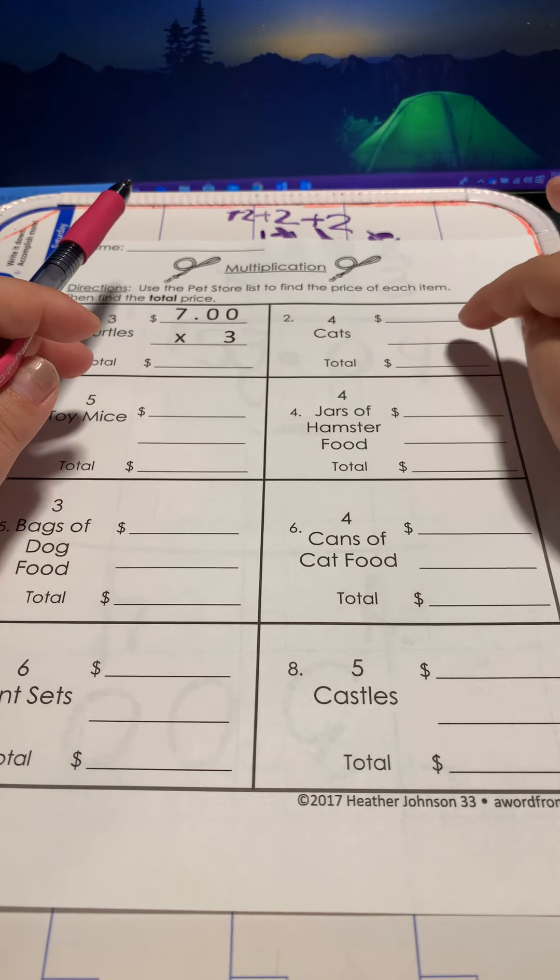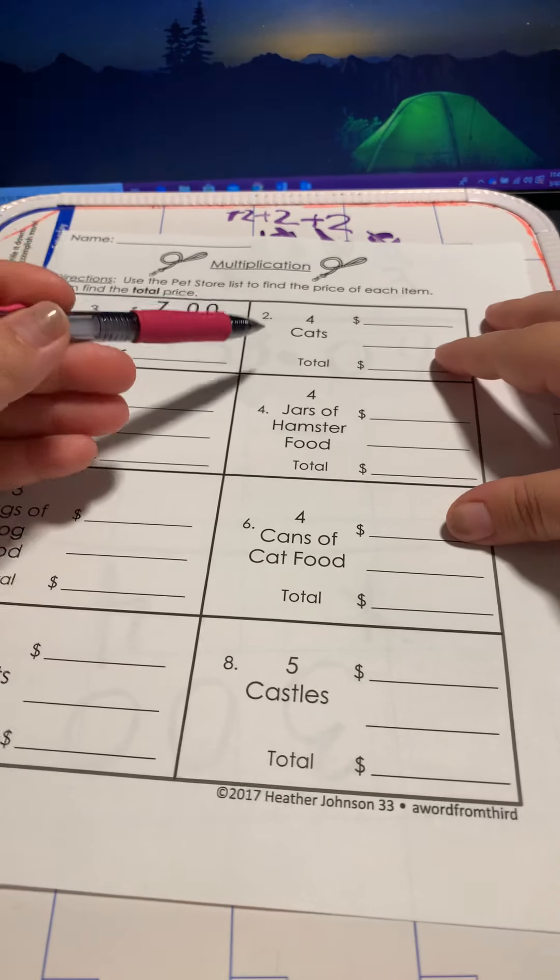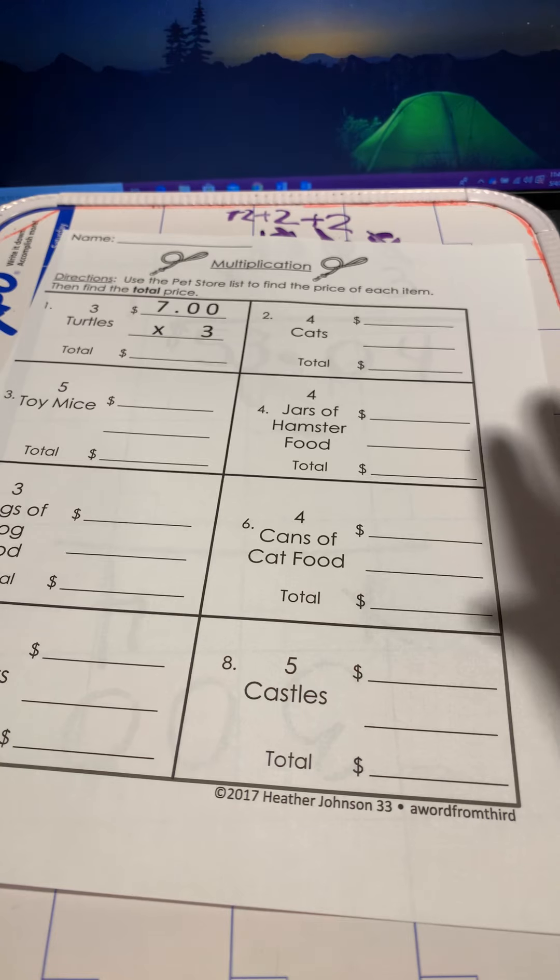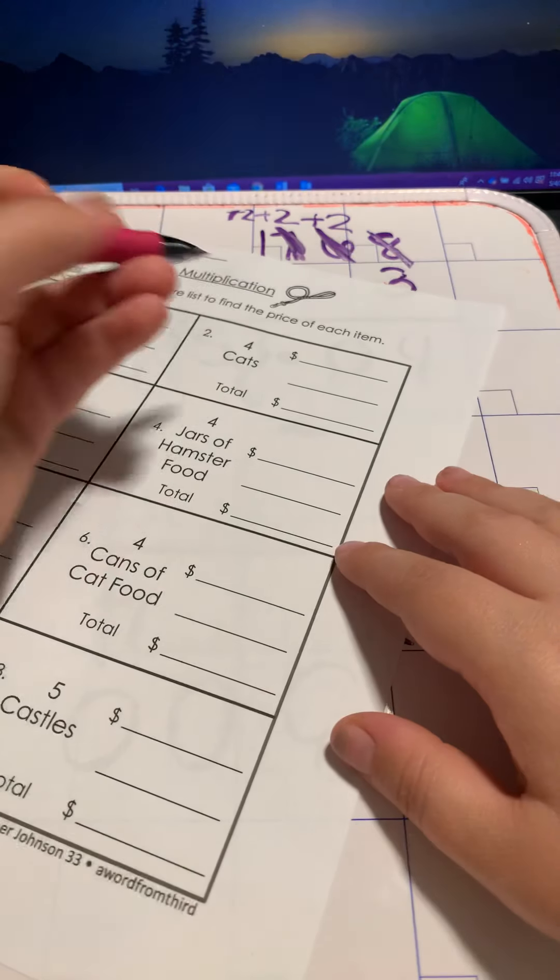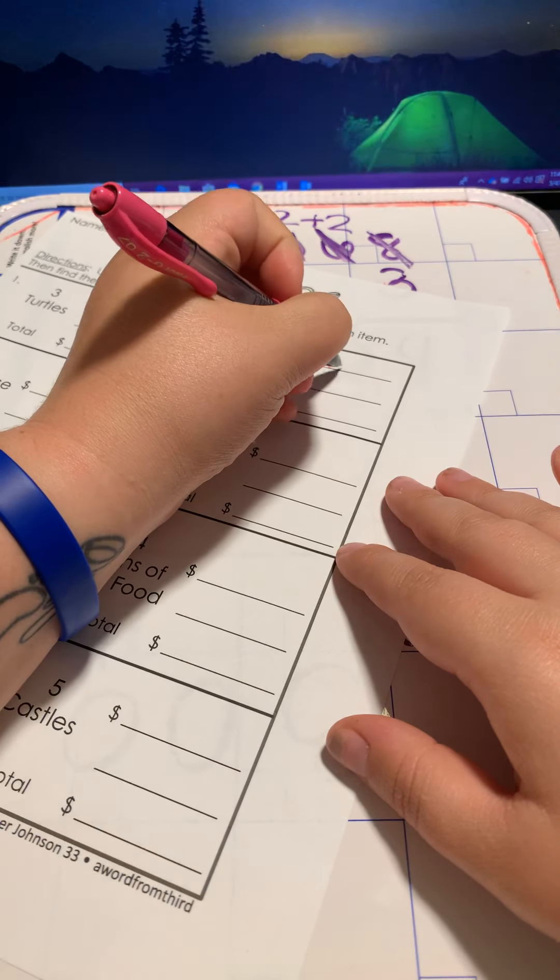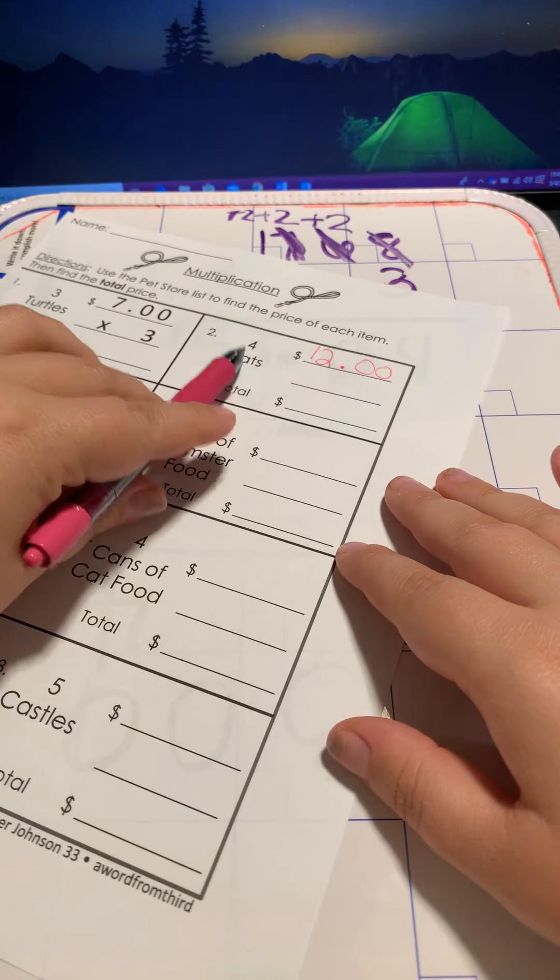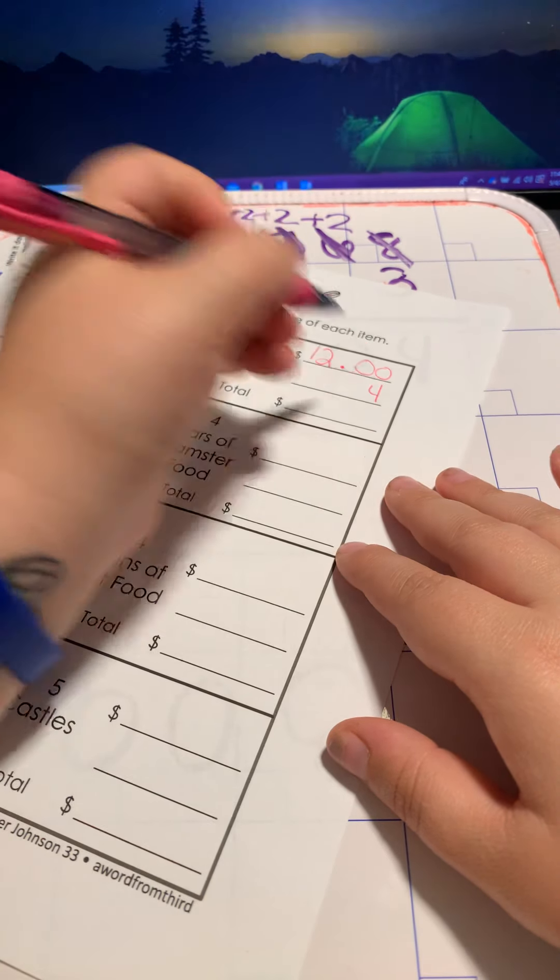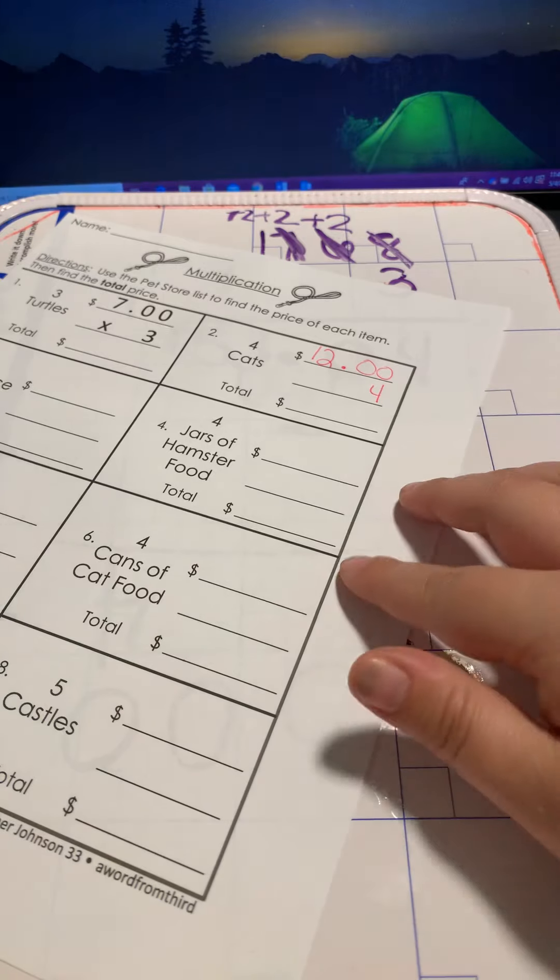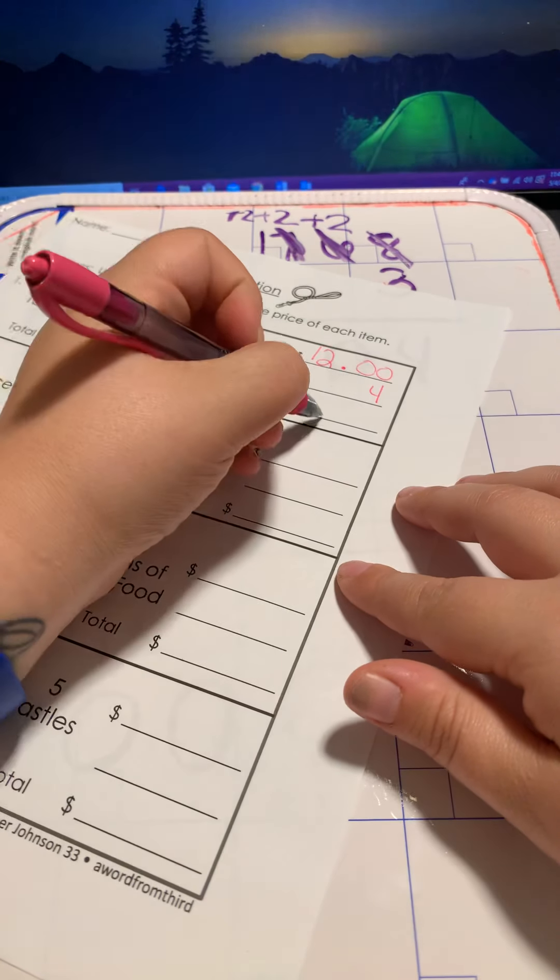So for cats, we know that cats are $12. We've done this one. So cats are $12. You're going to write 12, decimal, zero, zero. We need four of them. So you're going to write your four. They want you to write the work. Then you're going to multiply. Remember, bring your decimal down. So let's do this one because I already have it ready. Bring your decimal down.